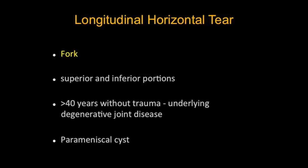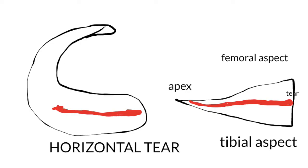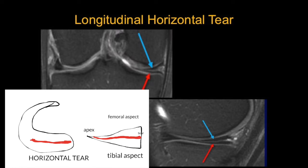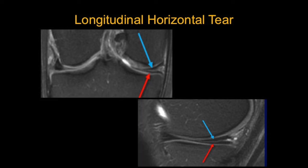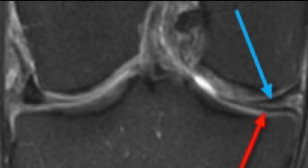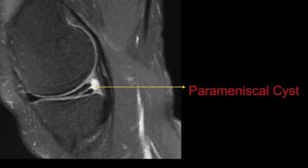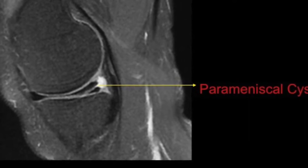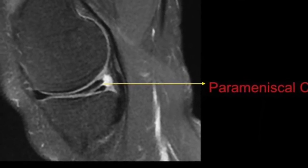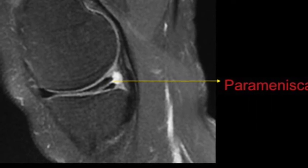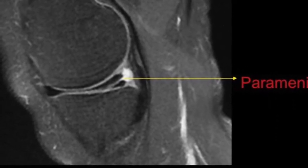Coming to the longitudinal horizontal tear. Here the tear runs in such a fashion that it divides the meniscus into a superior and an inferior portion. They are usually seen in patients with degenerative joint disease and are commonly associated with parameniscal cysts. See the PD hyperintense line running through the substance and reaching the tibial articular surface, with loculated fluid just adjacent to the tear — a classical parameniscal cyst in a horizontal tear.